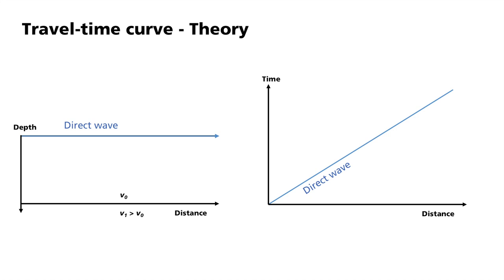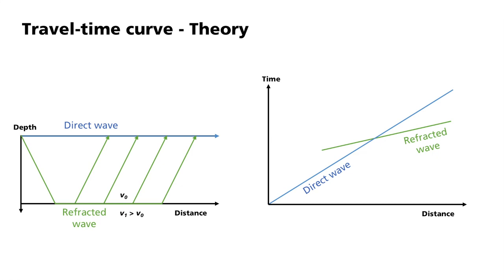For the direct wave, the further away it is recorded, the longer its travel time. We assume the propagation velocity to be constant, so the line in the travel time diagram appears to be straight. The second ray path we use is that of the refracted wave. It first runs downward before it is refracted at a critical angle and then propagates along the layer boundary with the higher velocity of the lower medium. At the end of the profile, it arrives at the geophones after the direct wave. From the point of overtaking, it becomes the first impact and can therefore be determined easily.